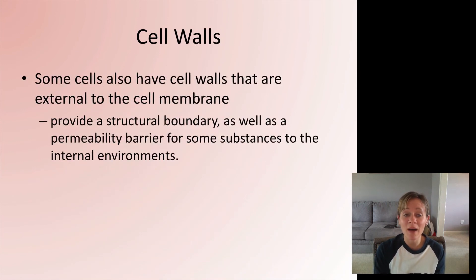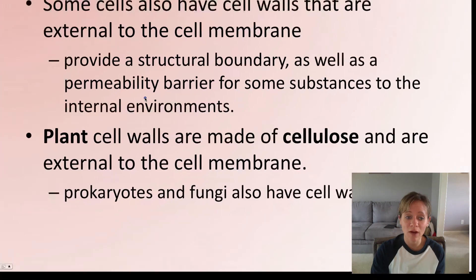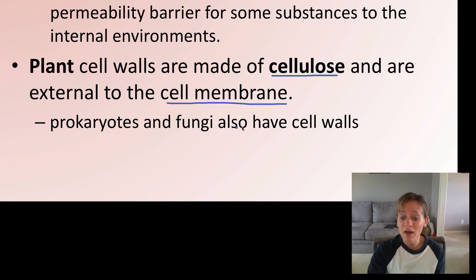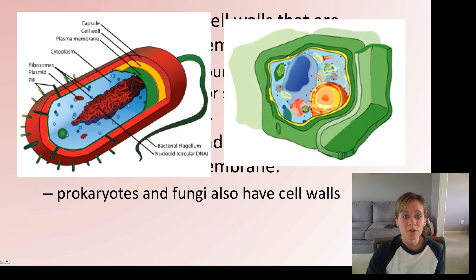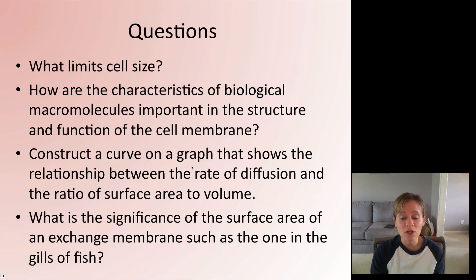Some cells, in addition to a cell membrane, also have a cell wall, which provides structure as well as a permeability barrier. Plant cell walls are made of cellulose — that carbohydrate polysaccharide from the first unit — and are external to the cell membrane, so plants have both. Some prokaryotes and fungi also have cell walls made of slightly different material. Here is a prokaryotic cell with the plasma membrane in green and the cell wall in yellow, and a plant cell in green with its cell wall. These are your questions to answer in your video notes, which I will collect along with the embedded questions asked throughout.